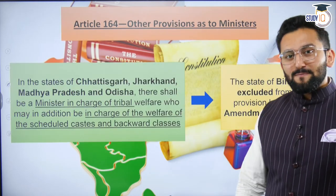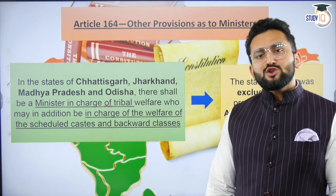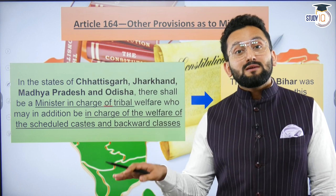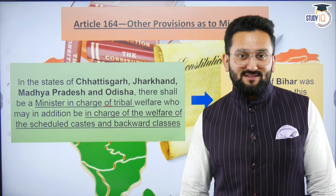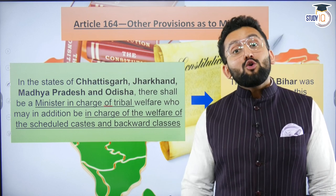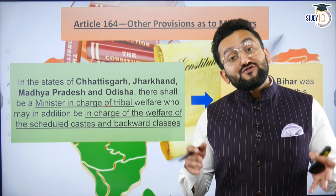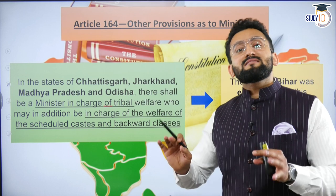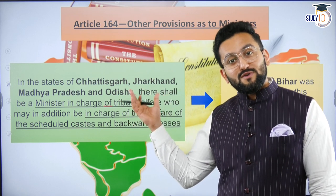Article 164 — other provisions related to ministers, which we also discussed. In the states of Chhattisgarh, Jharkhand, Madhya Pradesh, and Odisha, there shall be a minister in charge of tribal affairs — this is a mandatory clause. The logic is the presence of a considerable number of tribal population in these states. The minister is also in charge of the welfare of scheduled castes and backward classes. How ministers are appointed: when one person gets more than 50% of MLAs supporting their name as CM, the Governor says you are going to be CM of that state. That person gives a list to the Governor requesting those people be appointed as ministers.